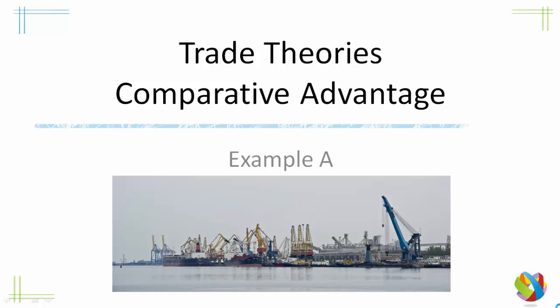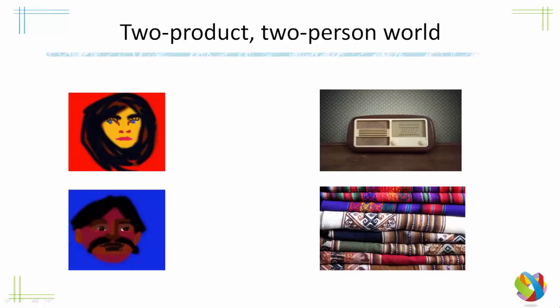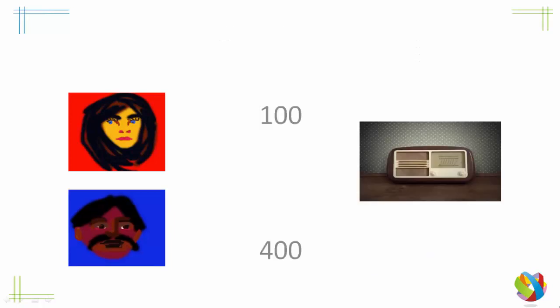Let's get started. Let's imagine a world where there are only two people and only two products. We're going to have Mary and Peter. They can both produce either radios or cloth. Let's have a look at their production possibilities for radios.